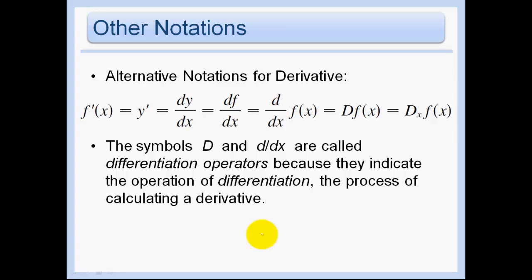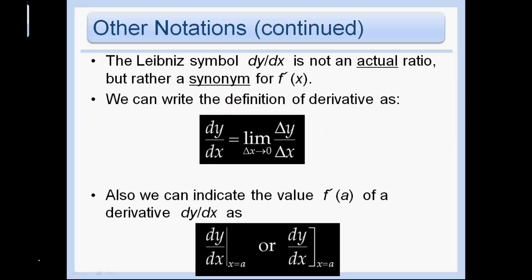This is the same slide covering key terms — just different ways of expressing f prime of x: it's the same as y prime, which is the same as dy dx, the derivative of y with respect to x; df dx, the derivative of the function with respect to x; and d dx of f of x. We don't really use those too much in this course. And then we look at the Leibniz notation. We can evaluate dy dx at x equals a — you can put just the line or you can put the bracket. These are all ways of saying what is f prime at a point a.